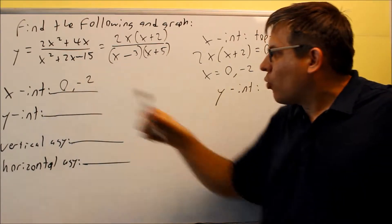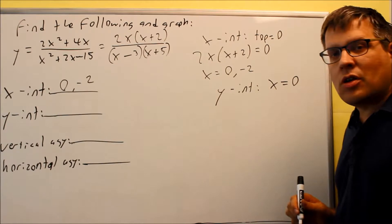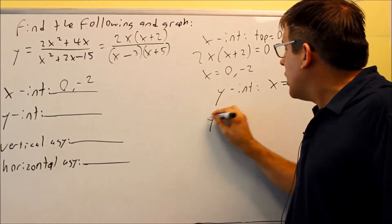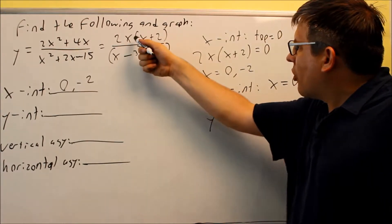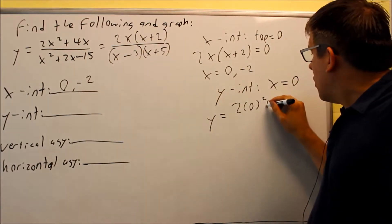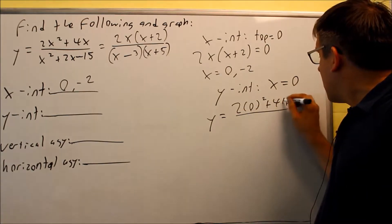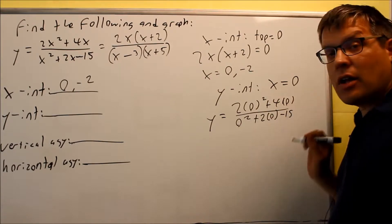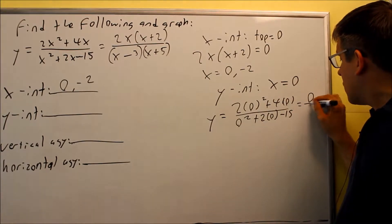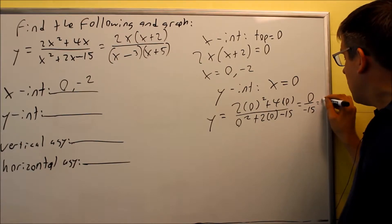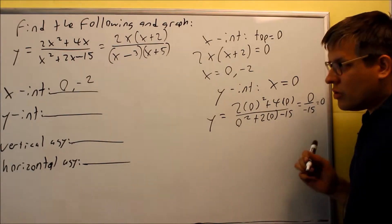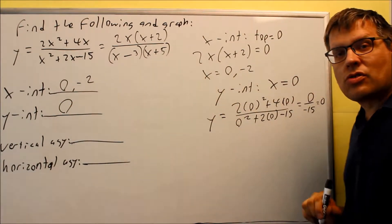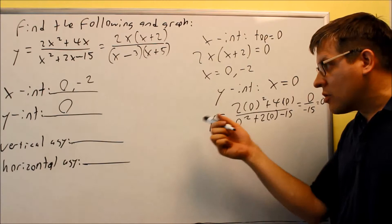Next, find the y-intercept by putting zero in for x. Since zero is already one of our x-intercepts, we know automatically that the y-intercept is also zero. If we substitute zero into the equation, the numerator becomes zero, so the whole fraction equals zero. Whenever you have zero as an x-intercept, you'll always have zero for the y-intercept as well, because the graph crosses through the origin.